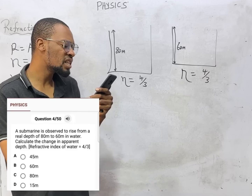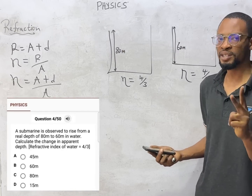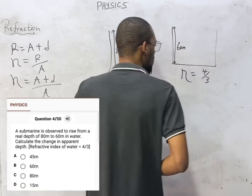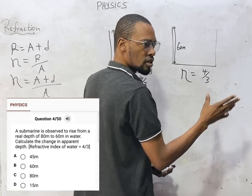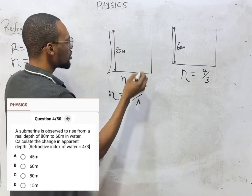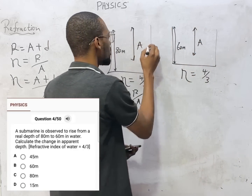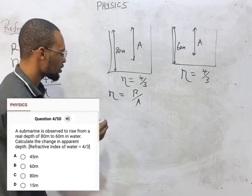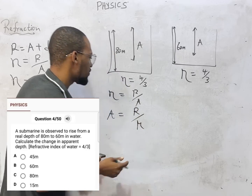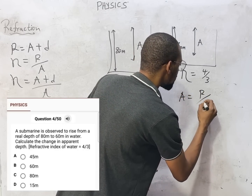We are asked to find the change in apparent depth. We will get two apparent depths: one for the first case of 80 meters and one for the second. The apparent depth formula is derived from: refractive index equals real depth over apparent depth, so apparent depth equals real depth over refractive index.